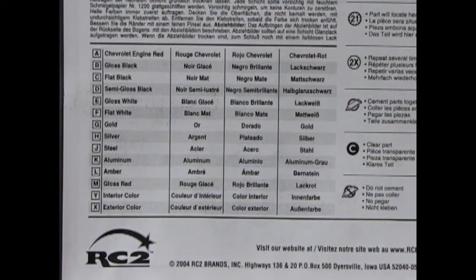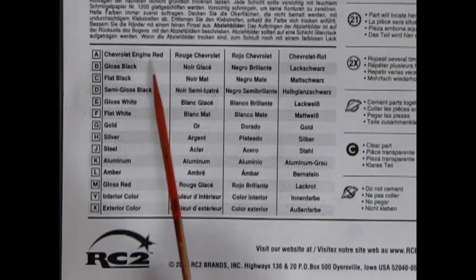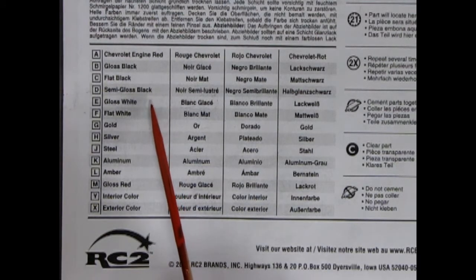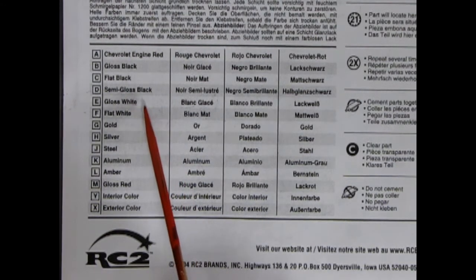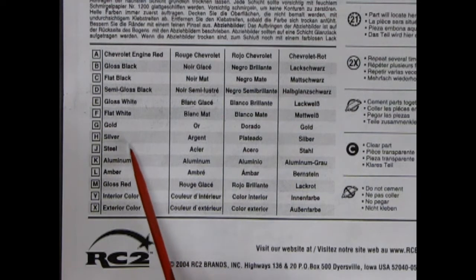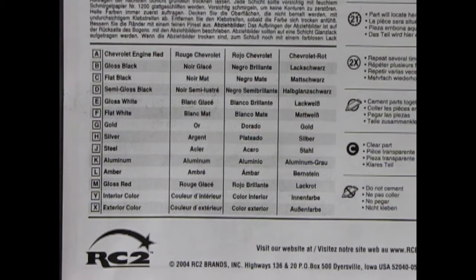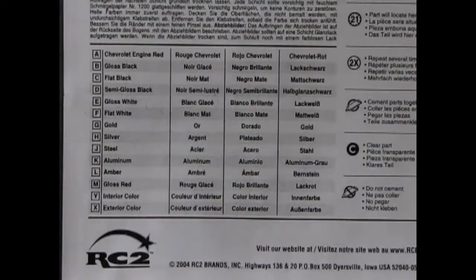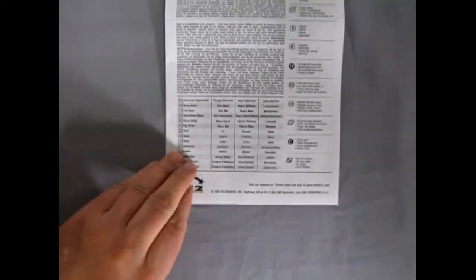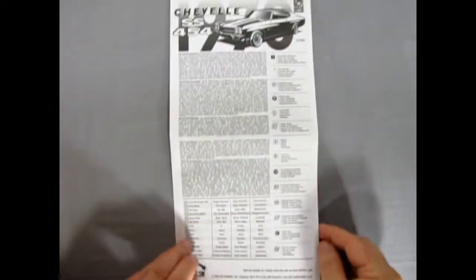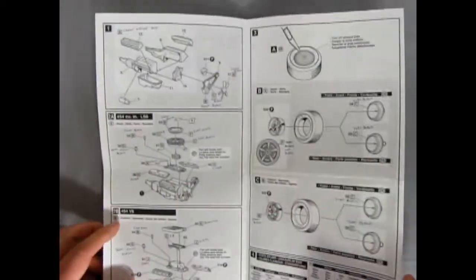Now here we have Chevrolet engine red, gloss black, flat black, semi-gloss black, gloss white, flat white, gold, silver steel, aluminum, amber, gloss red. Interior color is Y and exterior color is X. So we'll just go back out here again and open up our instructions.